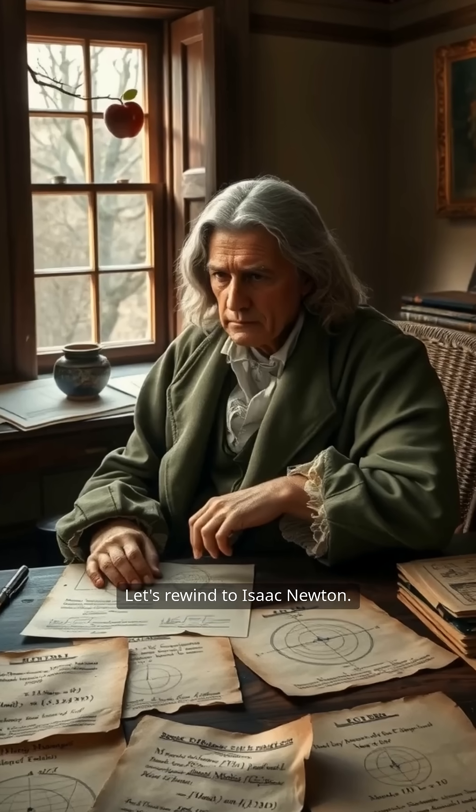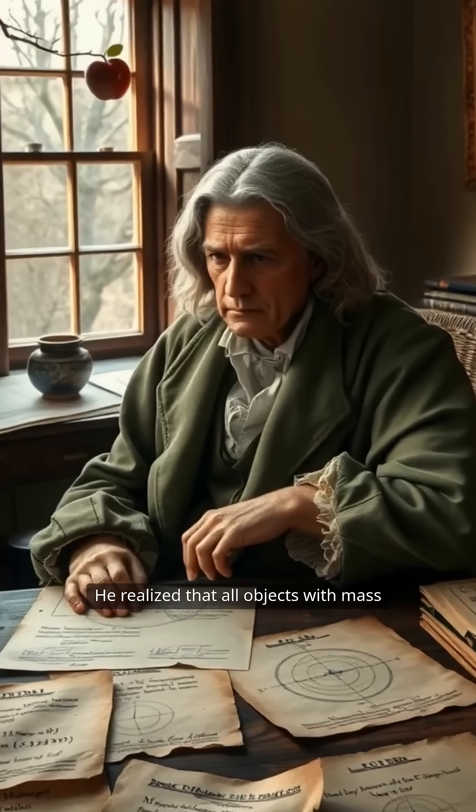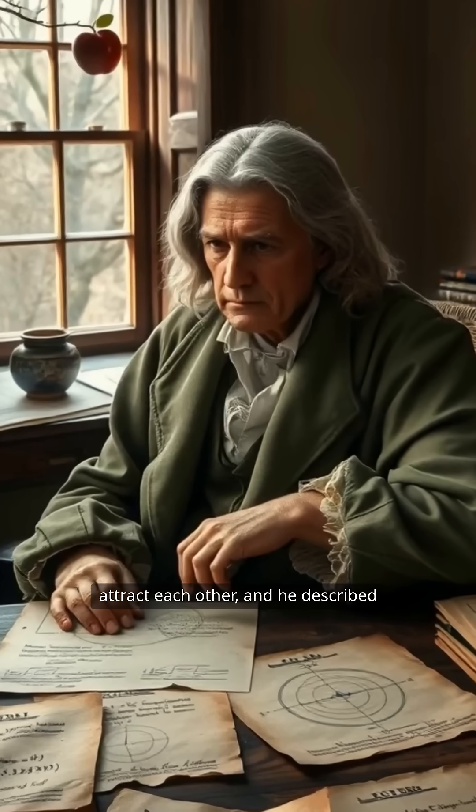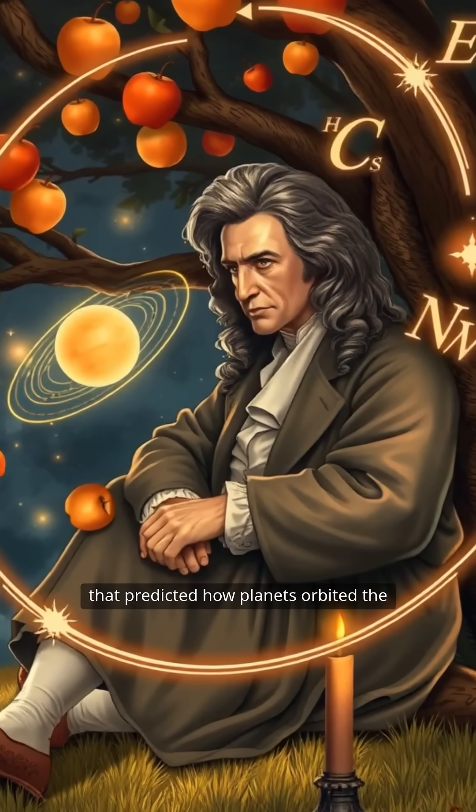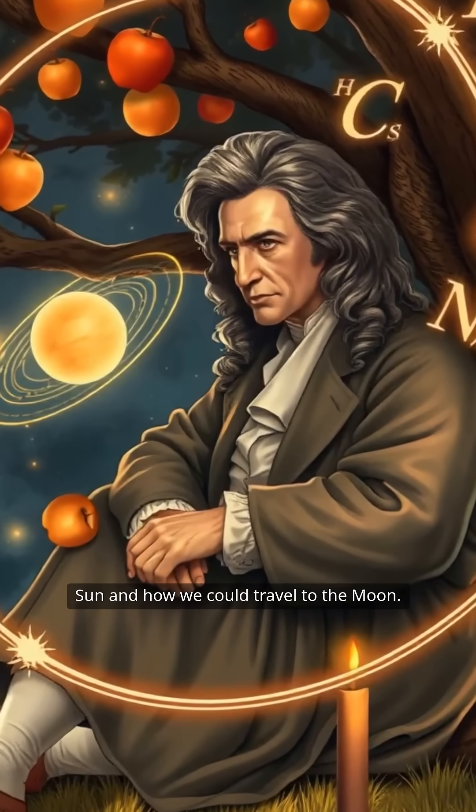Let's rewind to Isaac Newton. He realized that all objects with mass attract each other, and he described this attraction with elegant equations that predicted how planets orbited the sun and how we could travel to the moon.